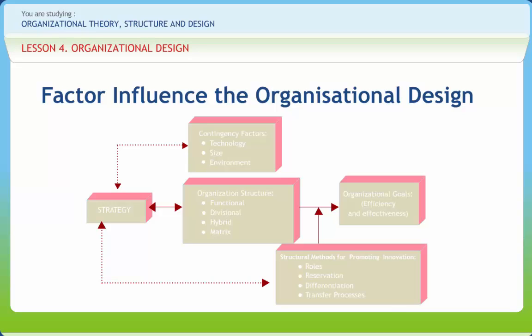Contingency factors affecting organization structure. First is technology — the knowledge, tools, equipment, and work techniques used by an organization in delivering its product or service. Second is technological interdependence: the degree to which different parts of the organization must exchange information and materials in order to perform the required activities.